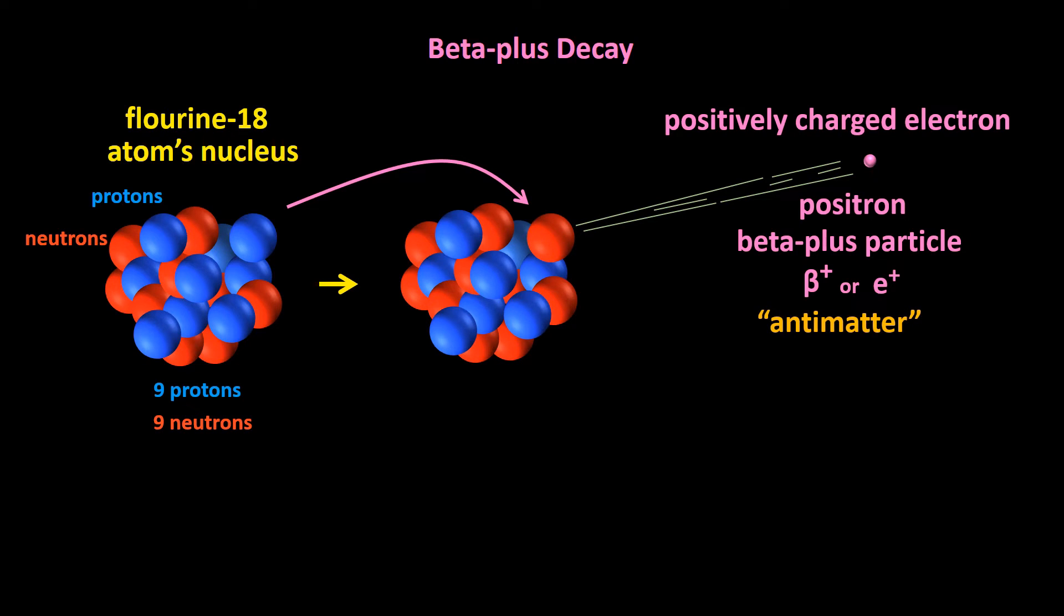It is identical to an electron, a normal electron, in every respect, except that it has a positive charge instead of a negative charge. Beta plus decay is also called positron emission.